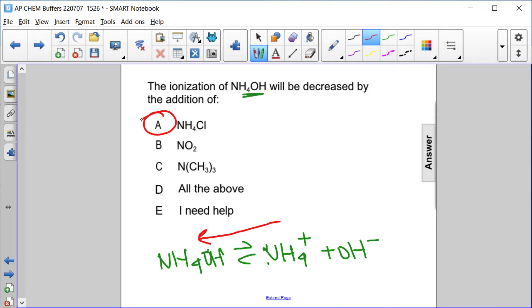And the only choice that has one of those common ions is A, because we have the ammonium ion and the chloride ion. So the addition of this ammonium ion will shift the equilibrium to the left, decreasing the ionization of NH4OH.